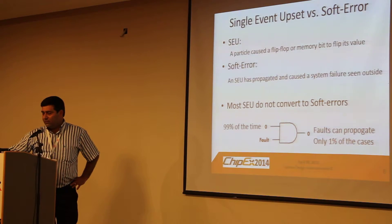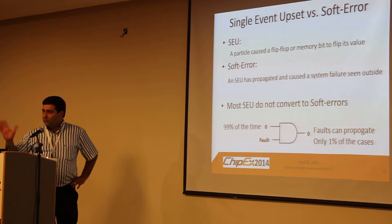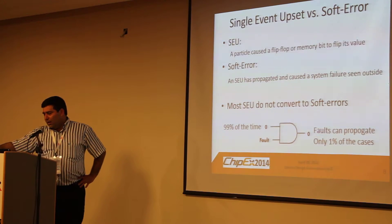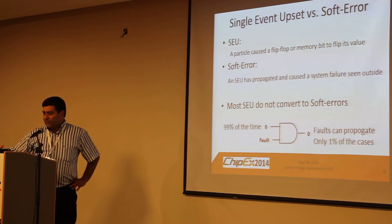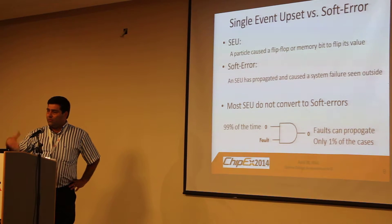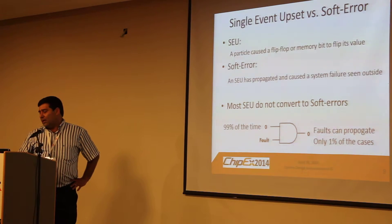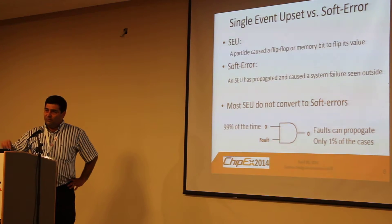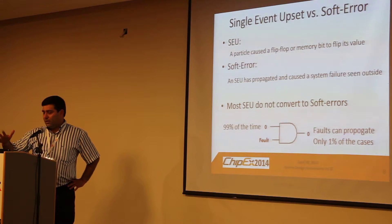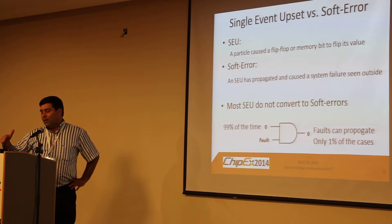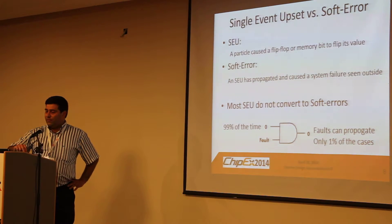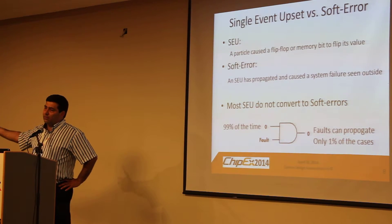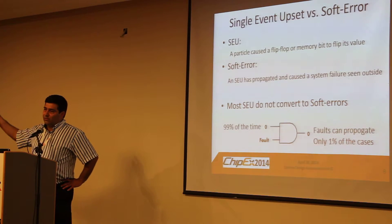A single event upset (SEU) is defined as when a particle causes a flip-flop to flip its stored value. But is this flip-flop important — does it influence anything? We don't know. A soft error is when this single event upset has propagated and caused an error in other places, eventually causing an observable error outside of the chip.